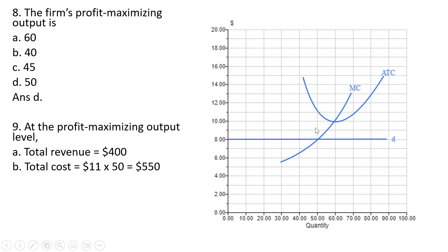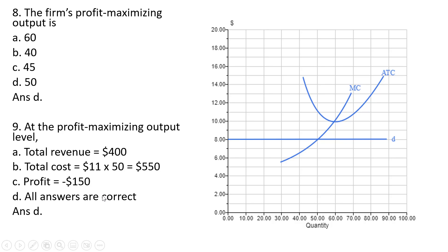At 50 units of output, average total cost is $11. Walking up to the average total cost curve gives $11. Taking $11 and multiplying by output gives total cost. Answer choice B is correct. Therefore, profit is minus $150: $400 minus $550 represents an economic loss of $150. All answers are correct.